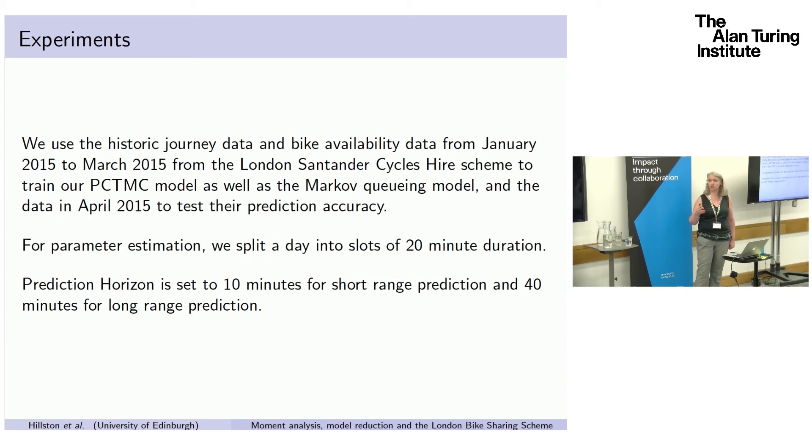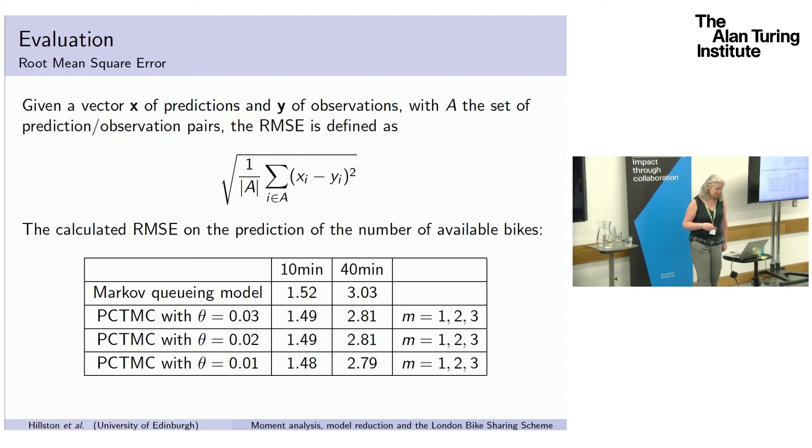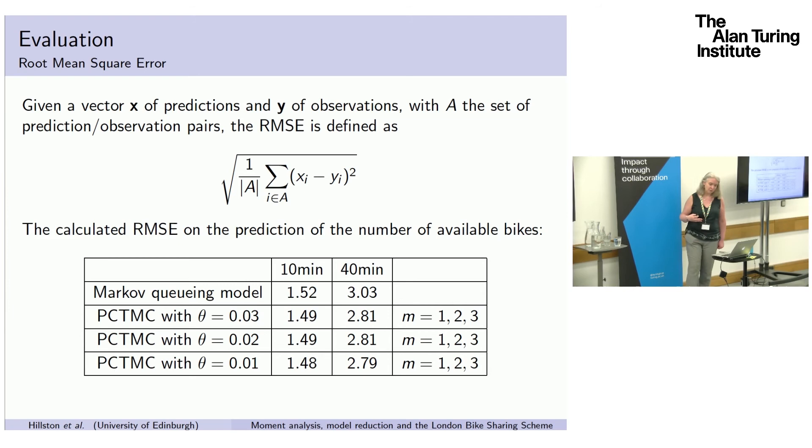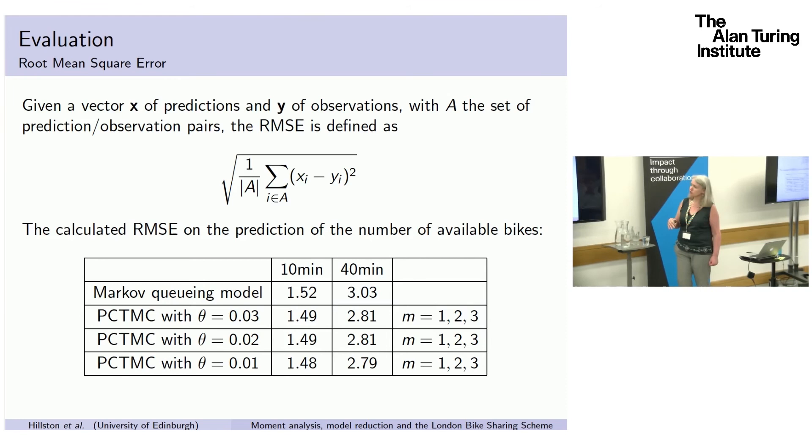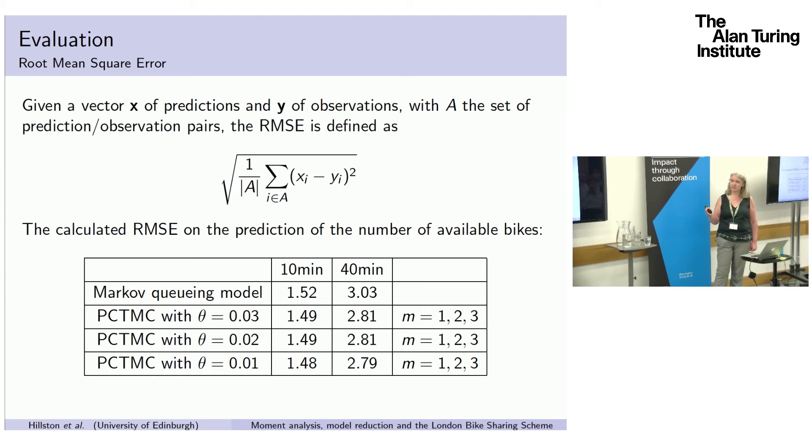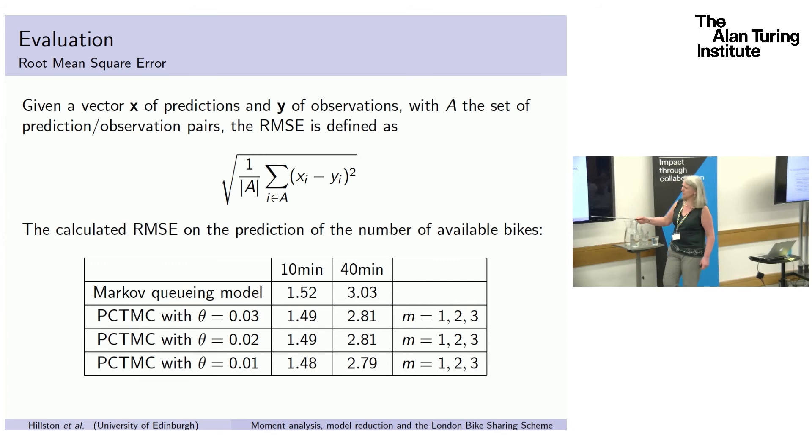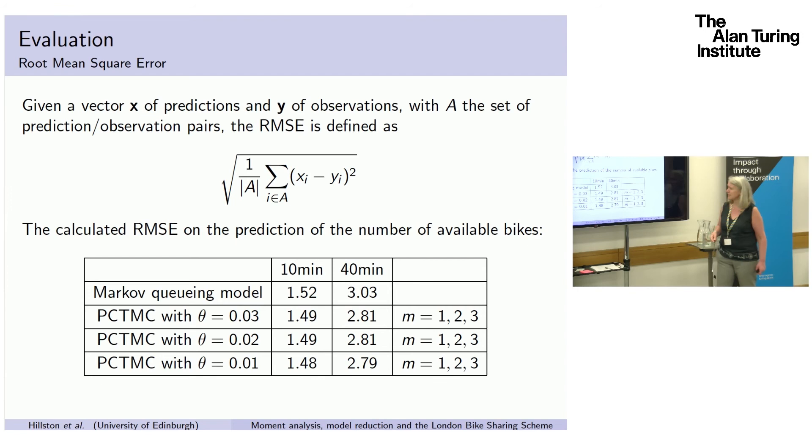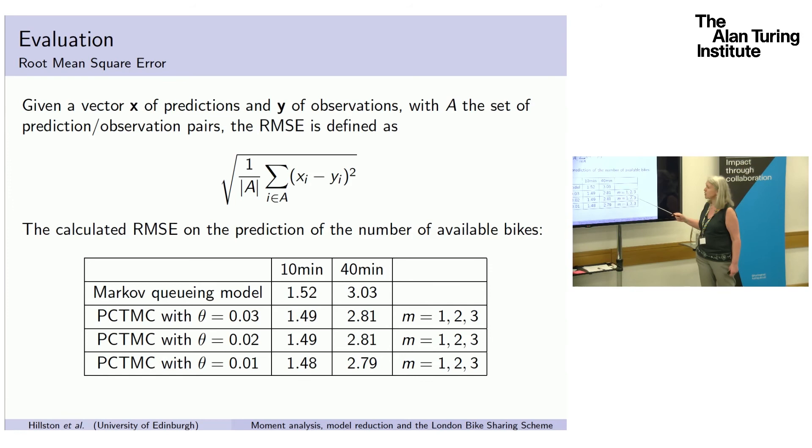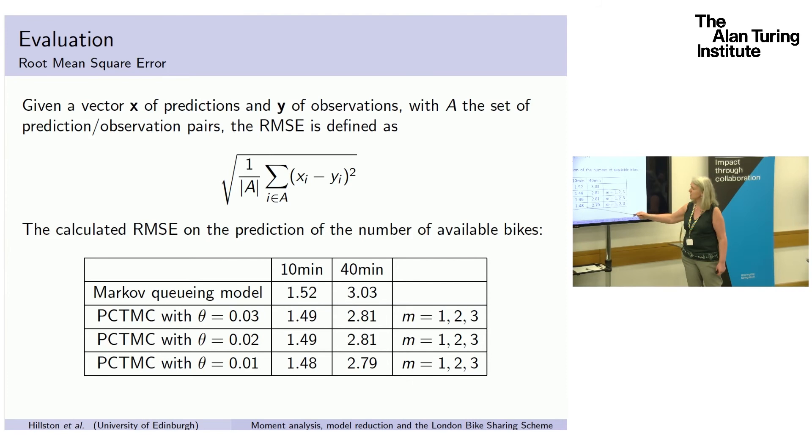First of all we did a comparison just using the technique that appears in the literature most of all, which is root mean square error. We looked at a comparison between the naive Markovian queuing model and our model with different thresholds of significance for the flows. We can see that choosing this between 0.01 and 0.03 makes very little difference. In this case it doesn't matter how many moments we do because we're only looking at the expectation. We can see that for 10 minutes it doesn't really make much difference over the Markovian model, but for the 40 minute window we have more accuracy.